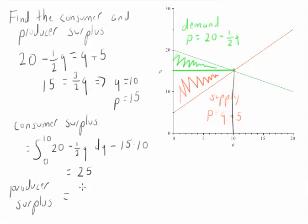So the area in the rectangle will be 15 times 10 minus the integral from 0 to the equilibrium quantity of 10 of our supply curve, which is Q plus 5 dQ. And let's see, that's going to come out to 50.